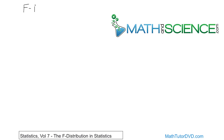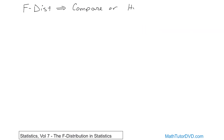We're going to be talking about the F-distribution, which is used when we're doing hypothesis testing with two population variances — sigma one squared and sigma two squared. This looks complicated already, but you need to refresh your memory on what variance is. If you don't remember at all, go back to the previous lessons, because we're going to be talking about variances over and over again.